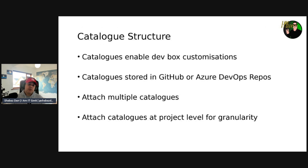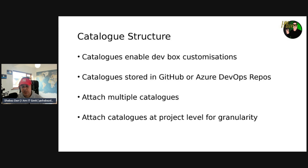Let's talk about catalog structure. Microsoft DevBox uses catalogs to allow developers to deploy customizations for DevBoxes by using a catalog of tasks and a configuration file to install software and extensions, clone repositories, and much more. Microsoft DevBox stores catalogs in either GitHub repositories or Azure DevOps service repositories, depending on what your users and organization use.